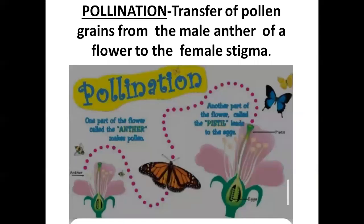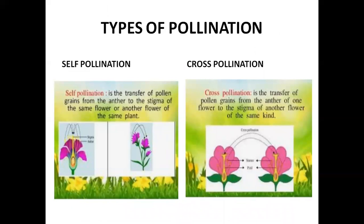As mentioned, the anther contains pollens. The transfer of pollen grains from the male anther of a flower to the female stigma is known as pollination. Pollination can be classified into two types. Self-pollination is when pollen grains are transferred from the anther to the stigma of the same flower or another flower of the same plant. Cross-pollination is when pollen grains are transferred from the anther of one flower to the stigma of another flower of the same kind. After pollination, pollen grains fuse with the egg and form seeds.